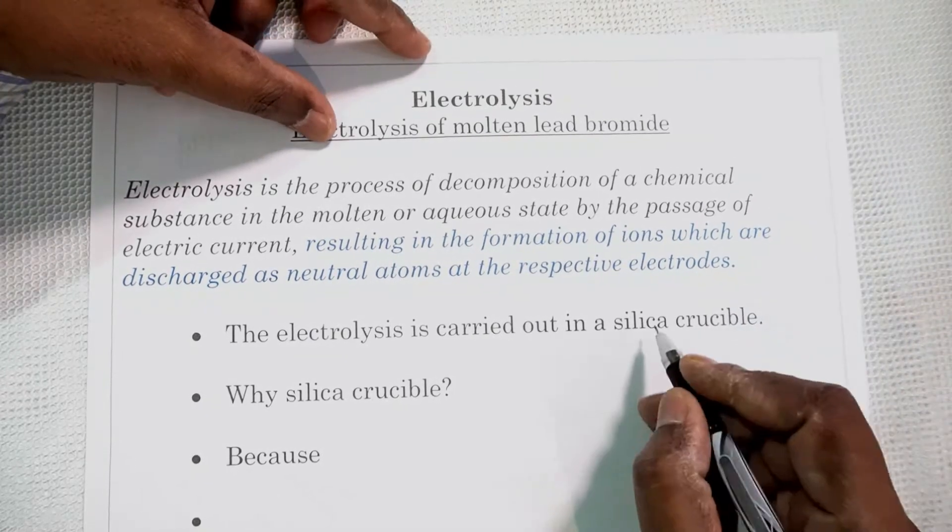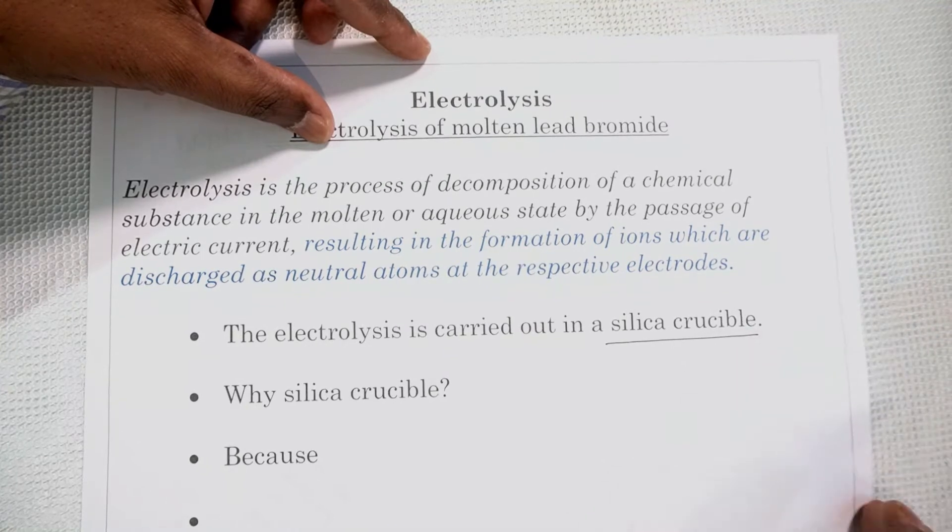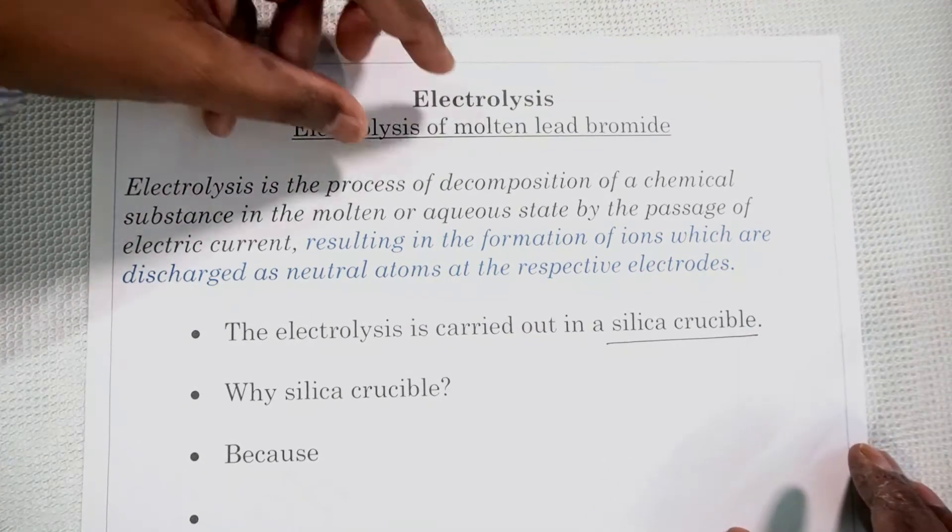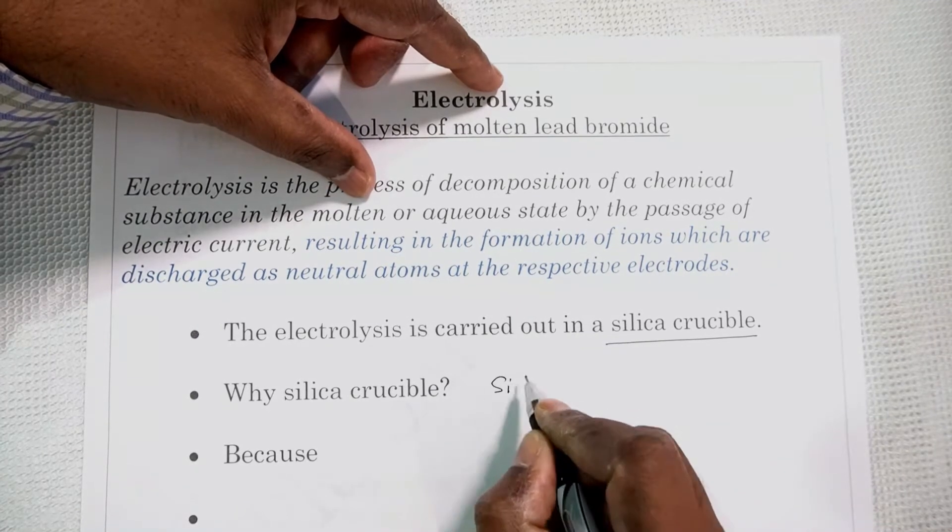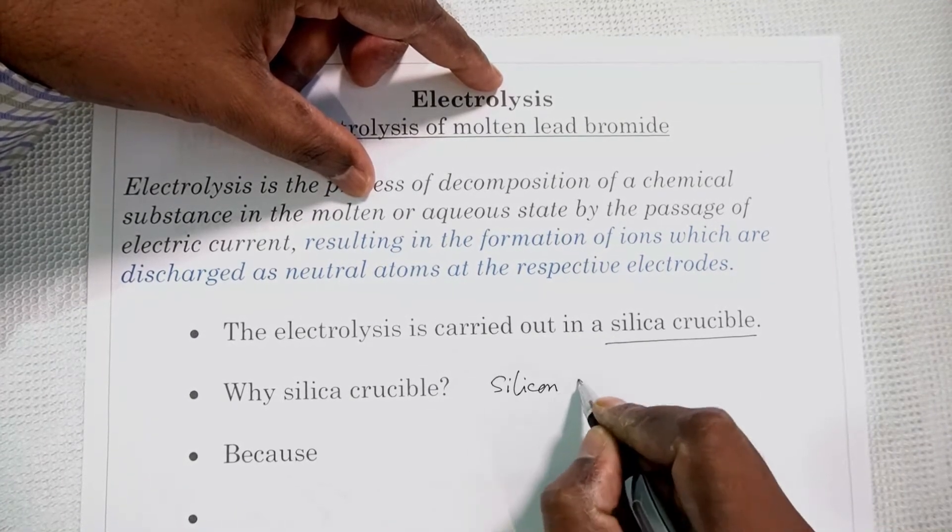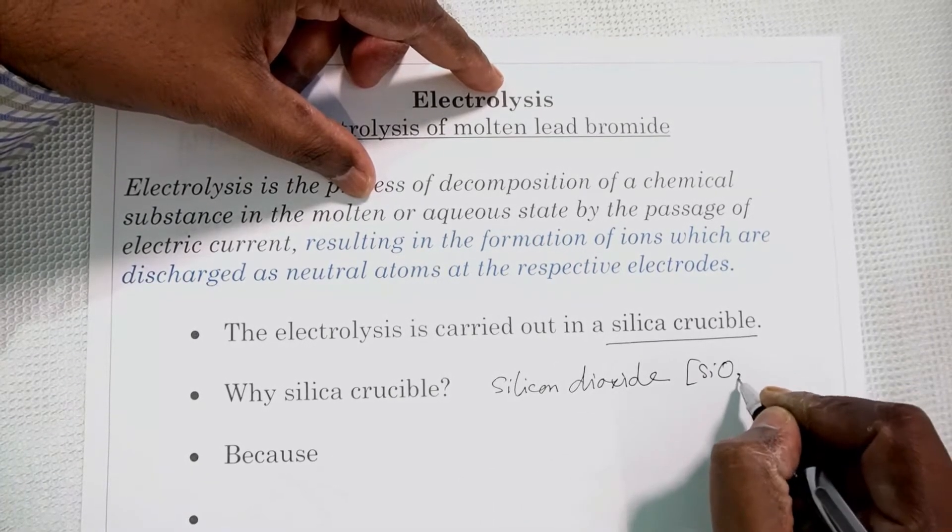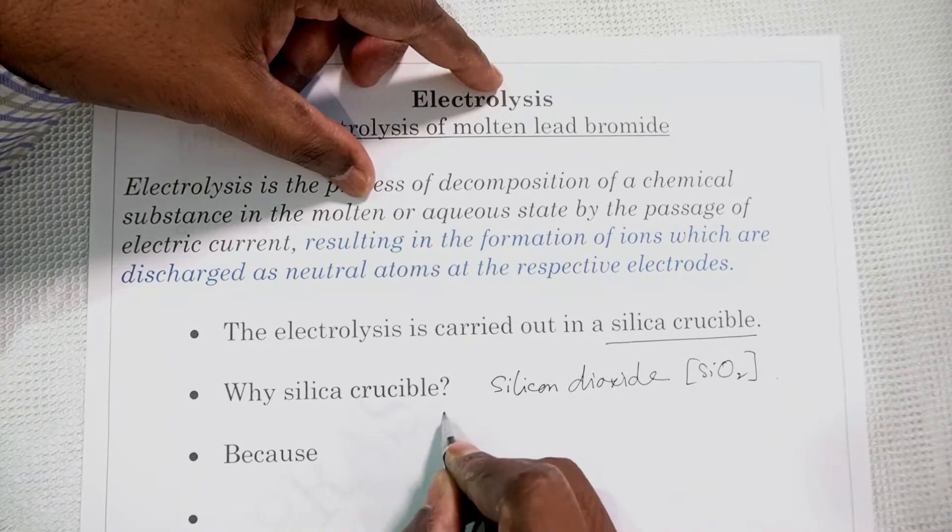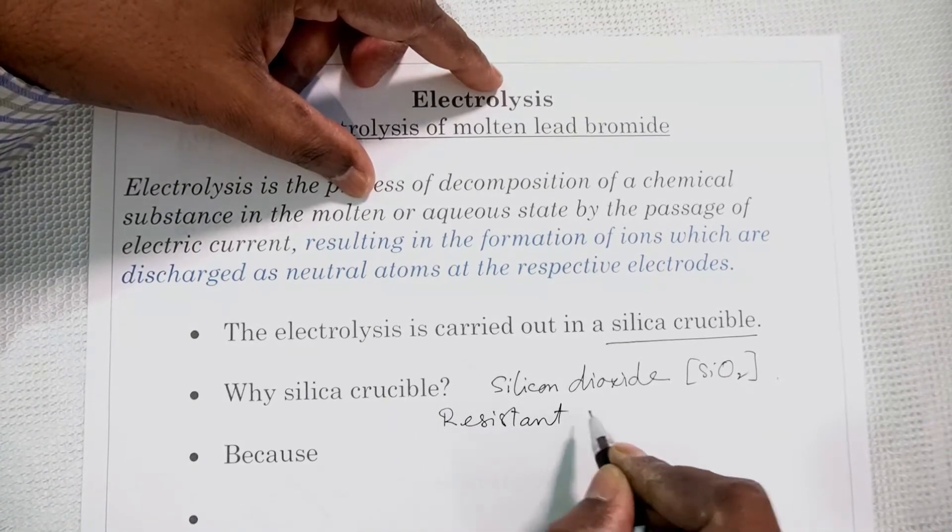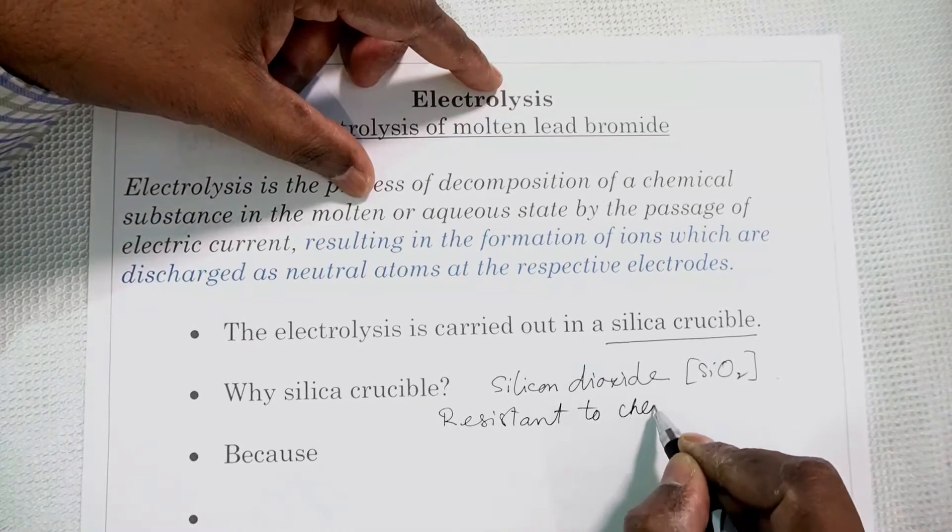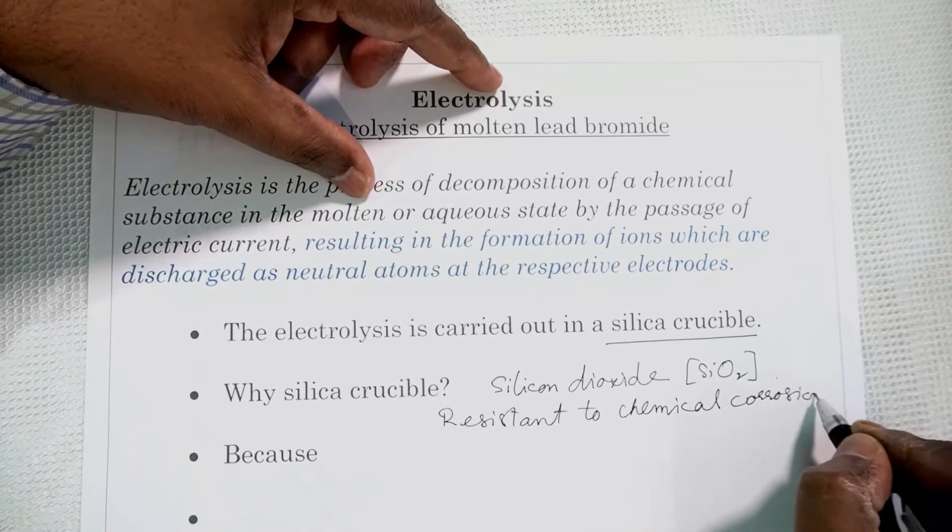Electrolysis is carried out in a silica crucible. The container used for conducting the electrolysis of molten lead bromide is a silica crucible. Now why silica crucible? Silica is silicon dioxide, SiO2, which is resistant to chemical corrosion.